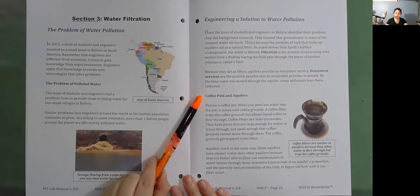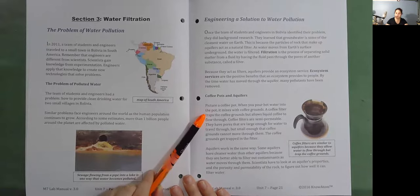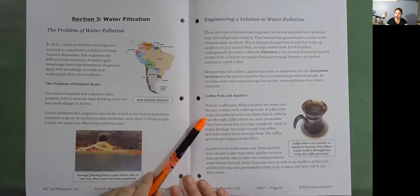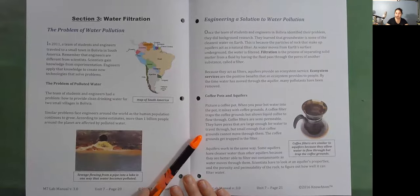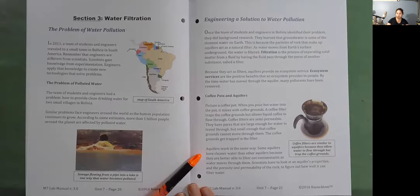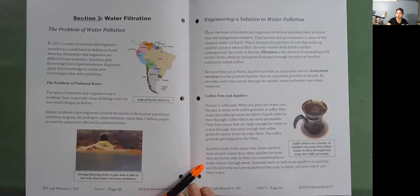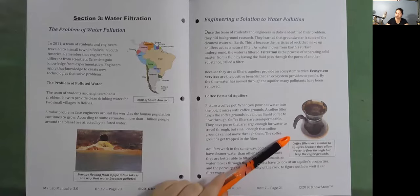Coffee Pots and Aquifers. Picture a coffee pot. When you pour hot water into the pot, it mixes with coffee grounds. A coffee filter traps the coffee grounds but allows liquid coffee to flow through. Coffee filters are semi-permeable. They have pores that are large enough for water to travel through, but small enough that coffee grounds cannot move through them. The coffee grounds get trapped in the filter. Aquifers work in the same way. Some aquifers have cleaner water than other aquifers because they are better able to filter out contaminants as water moves through them. Scientists have to look at an aquifer's properties and the porosity and permeability of the rock to figure out how well it can filter water. Coffee filters are similar to aquifers because they allow water to flow through but trap the coffee grounds.